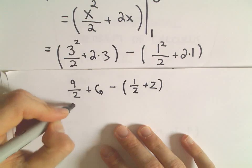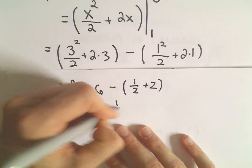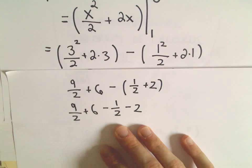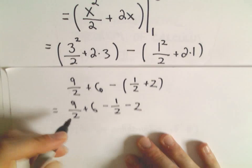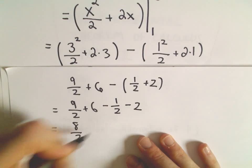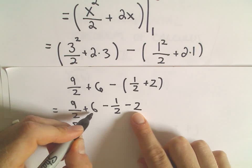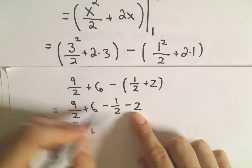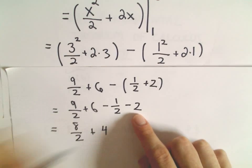So that's 9 halves plus 6 minus 1 half minus 2. When we distribute the negative, 9 halves minus 1 half, that's going to give us 8 halves. Positive 6 minus 2, that's going to give us positive 4.